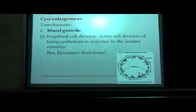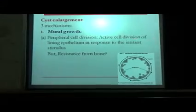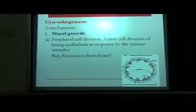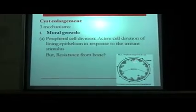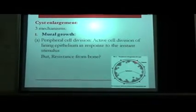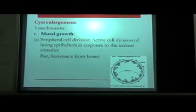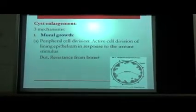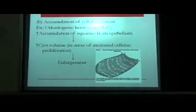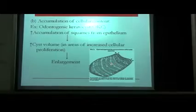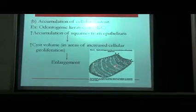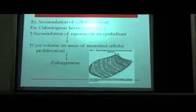Looking at them in detail: under peripheral cell division, there is active cell division of the lining epithelium in response to the irritant stimulus. For example, bacterial endotoxins in the carious tooth will cause more and more active cell division of the lining epithelium in response. However, there will also be resistance from the surrounding bone, so there can't be just one theory governing the expansion of the cyst. There will also be accumulation of cellular content as cells proliferate and form a ball of mass — for example, in odontogenic keratocysts, there will be accumulation of squames from the epithelium — causing increased cyst volume and further enlargement.